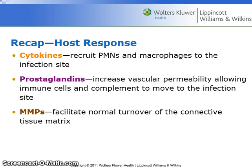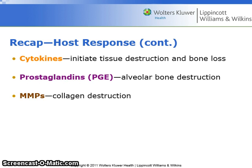A recap of the host response: Cytokines recruit PMNs and macrophages. Prostaglandins increase vascular permeability. MMPs facilitate normal turnover of the connective tissue matrix. Cytokines initiate tissue destruction and bone loss. PGE results in alveolar bone destruction, and MMPs result in collagen destruction.